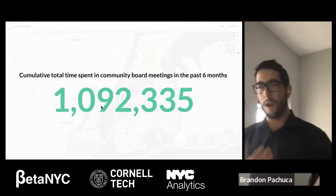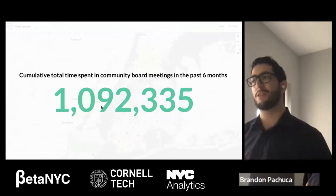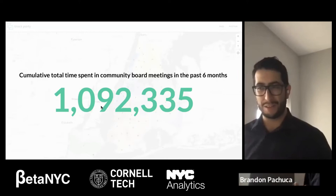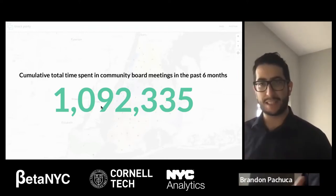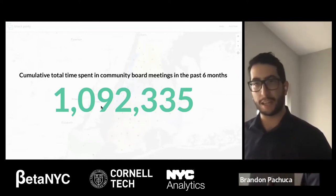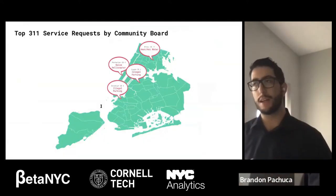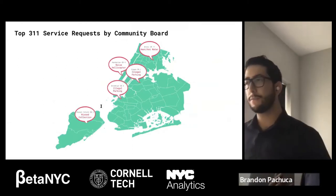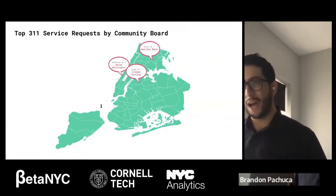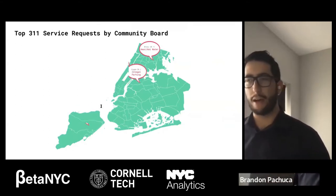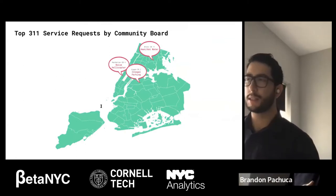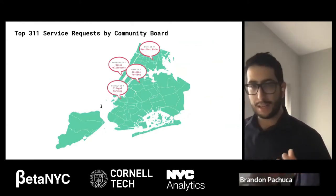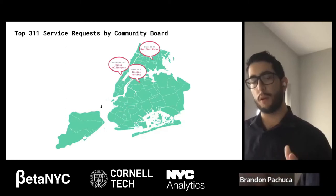We queried 1,092,335 service requests from 311 over the past six months through the NYC Open Data portal. This number was reduced after data cleaning to drop requests that didn't have location or community board data, then we spatially joined that information to the community boards. Looking at the top service requests per community board, we can see various trends: noise from helicopters is being reported in Manhattan, infrastructural challenges with heat and hot water in the Bronx, illegal parking in Brooklyn and Queens, and missed garbage collection in Staten Island.